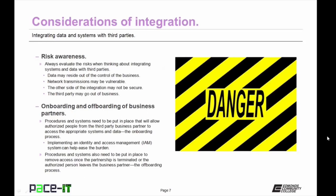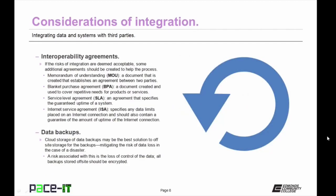This is the onboarding process. Procedures and systems also need to be put in place to remove access once the partnership is terminated or the authorized person leaves the business partner — this is the offboarding process. Then you need to consider the interoperability agreements. If the risks of integration are deemed acceptable, some additional agreements should be created to help the process along. There should be a memorandum of understanding — a document that establishes an agreement between two parties. Another document that might be needed is a blanket purchase agreement, used to cover repetitive needs for products or services.